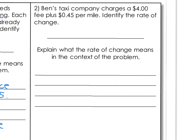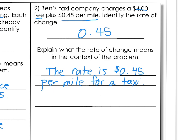Number two: Ben's Taxi Company charges a $4 fee plus $0.45 per mile. Identify the rate of change — which one of those is an actual rate? $0.45 per mile, so the rate is $0.45. What does that mean in the context of the problem? The rate represents the cost per mile for the taxi, written as $0.45 per one mile.